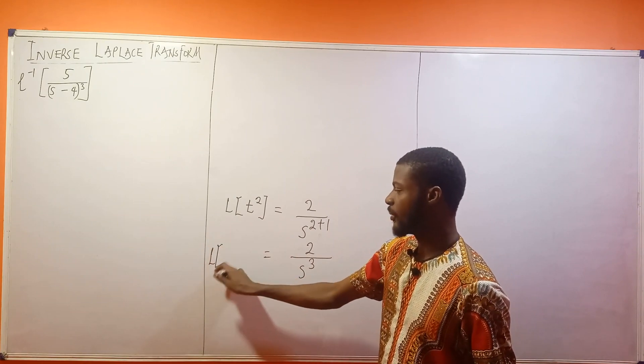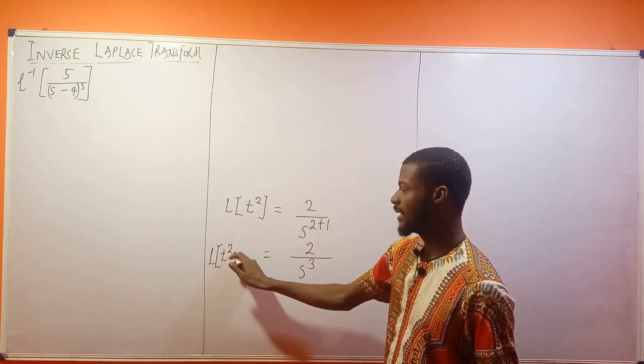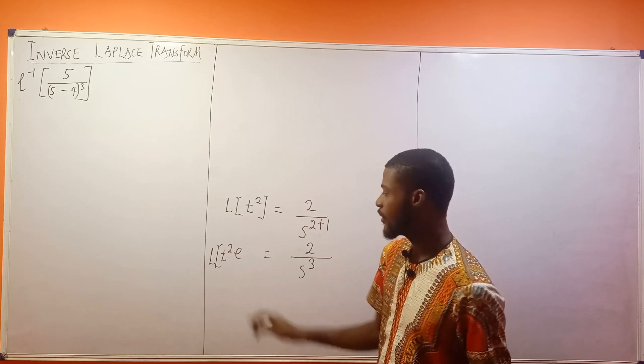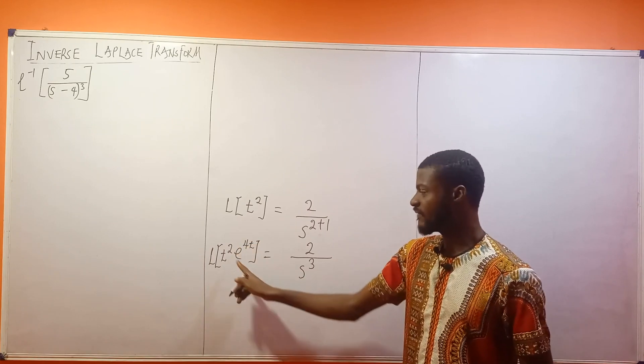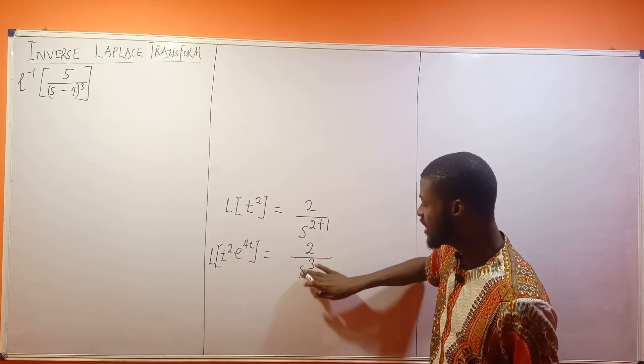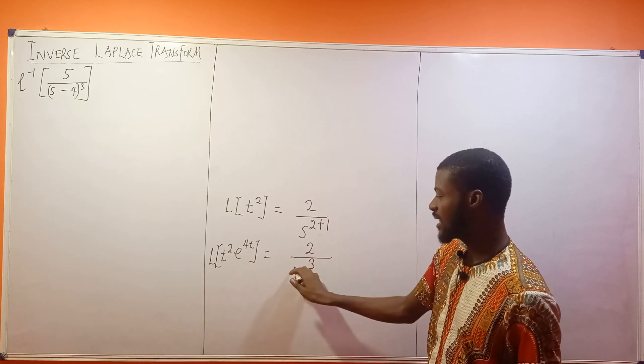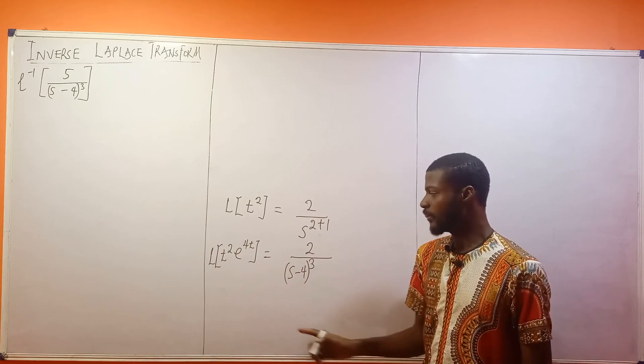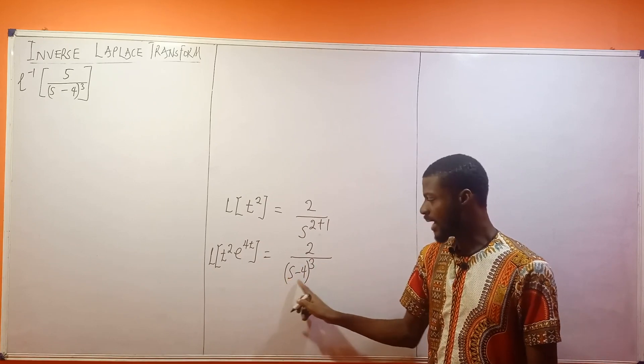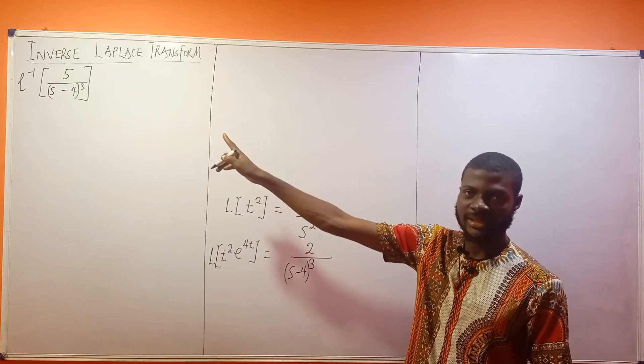If you have the Laplace transform of t² times e^(4t), something like this, exponential 4t, you will then replace S with S minus 4. So this is what originated that - the S minus 4.